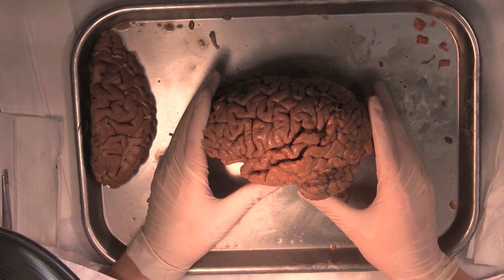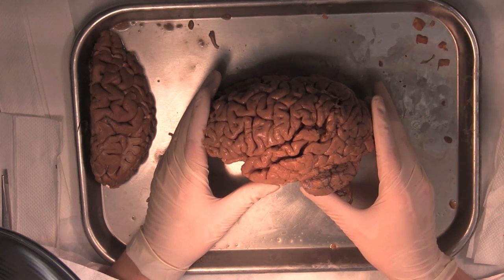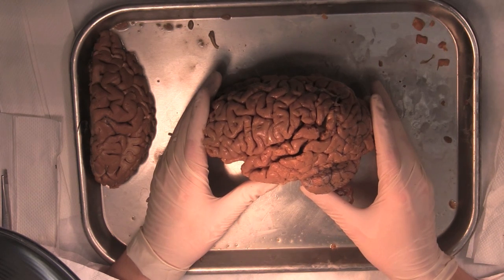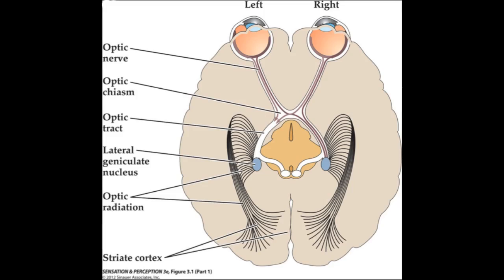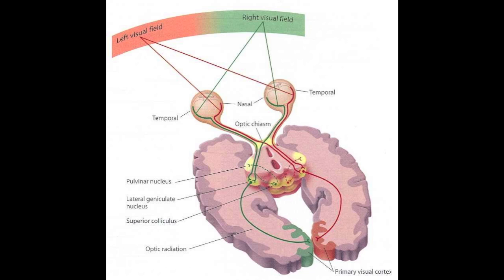Let's revisit the occipital lobe in the back of the brain. The occipital lobe's sole purpose is to process visual input. Data from the eyes is first pre-processed in the retina, then it travels along the optic nerve to the optic chiasm, where half of the data from each eye will cross sides, such that the left hemisphere of our visual field gets sent to the right side of our brain, and the right hemisphere gets sent to the left side of our brain.